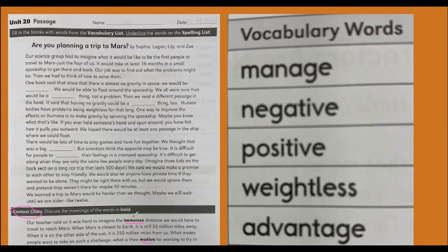Okay. So you see that when you travel, when Mars is closest to Earth, it's still 35 million miles away. So maybe extreme, like far, like big, it could be a big distance, like an extreme distance, hard to do. Okay, so immense.